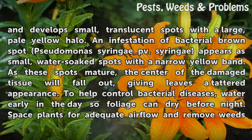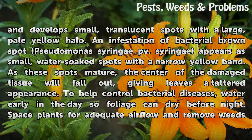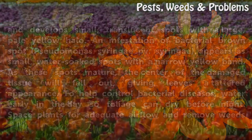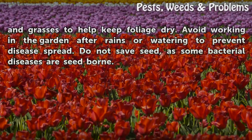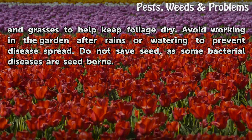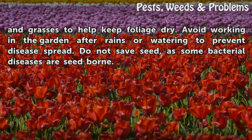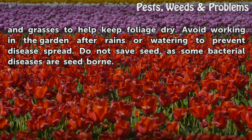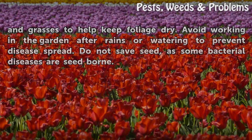To help control bacterial diseases, water early in the day so foliage can dry before night. Space plants for adequate airflow and remove weeds and grasses to help keep foliage dry. Avoid working in the garden after rains or watering to prevent disease spread. Do not save seed, as some bacterial diseases are seed-borne.